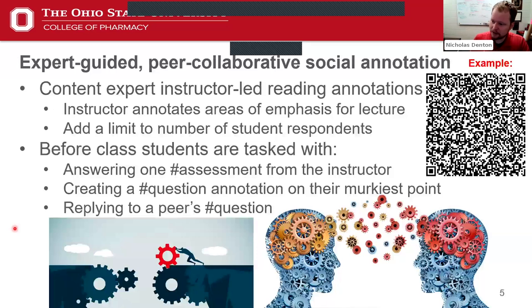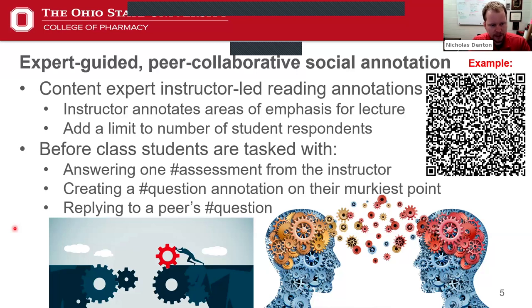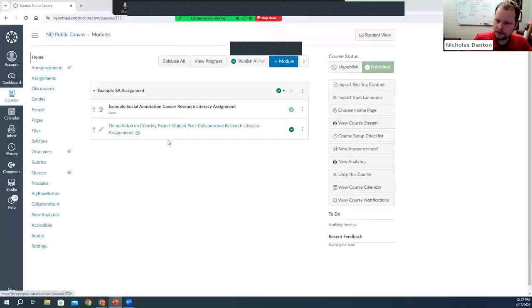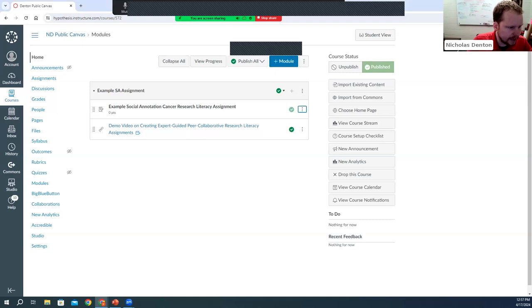Now that I've talked about the problems, let's talk about some solutions. We're going to go over an example of a socially annotated research journal assignment I have for my students. You can scan the QR code, and if you have a Hypothesis account, you'll be able to go right into a public Canvas page. If you don't, it only takes two minutes to make an account with just your name and email, and I will put the link in the chat so everyone will have access.